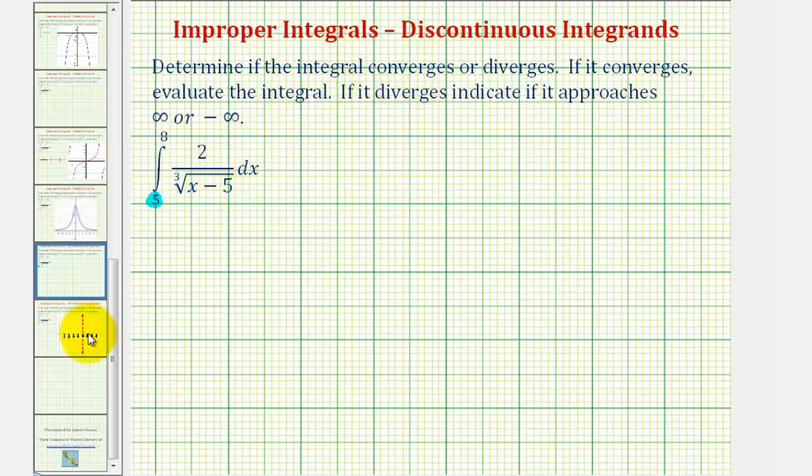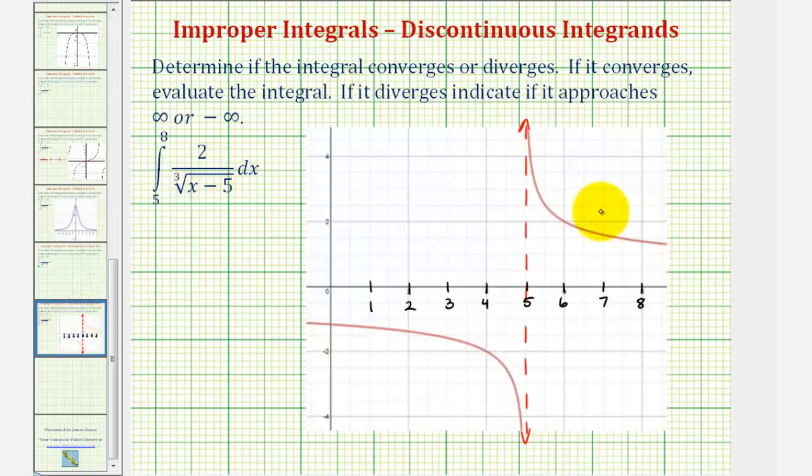We could also verify this graphically. Notice how the graph of the integrand would be this rational function, where we have a vertical asymptote at x equals positive five. So if we want to integrate from five to eight, we'll have to write it as a limit approaching five from the positive side or right side.